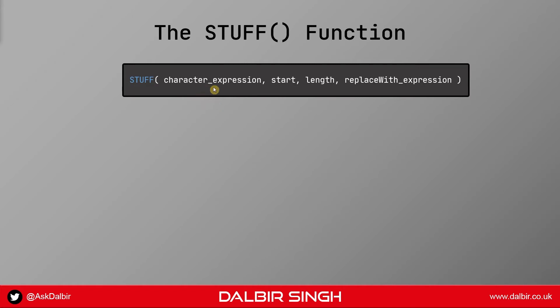The first parameter is the character expression — this is the string we want to operate on, which could be a column or a piece of text. Next is the start parameter, which specifies where we're going to initially insert our replacement text. If you're from a programming background you're probably used to using zero to specify the beginning of the index, but for the Stuff function that value is actually one.